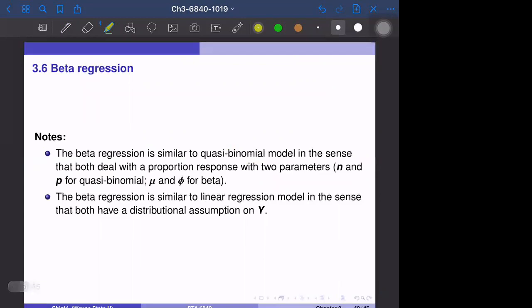Beta regression model is similar to quasi-binomial model in the sense that both models deal with a proportion response y with two parameters. The quasi-binomial has dispersion parameter σ² and mean parameter p. For quasi-normal model, μ is the mean, corresponding to p in some sense, and φ corresponds to the variance parameter. So it's similar, but what's the difference?